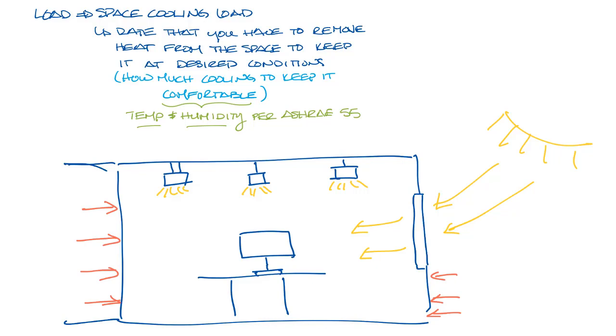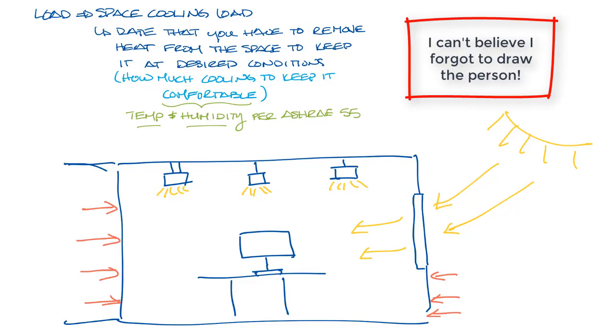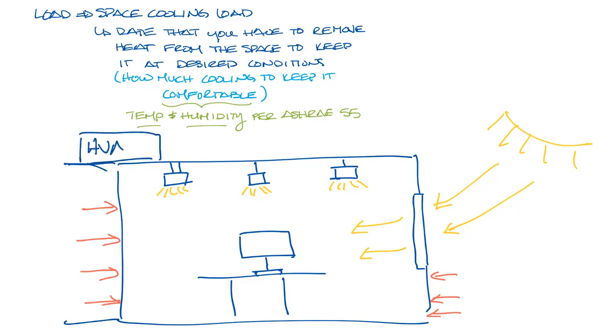Also, people have a heat load. People are approximately the same as a 100-watt light bulb. And although you wouldn't see it in the space, the ventilation air and HVAC equipment itself can add heat and humidity to the total building HVAC system.